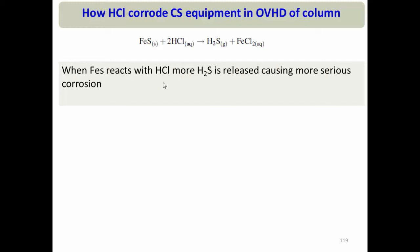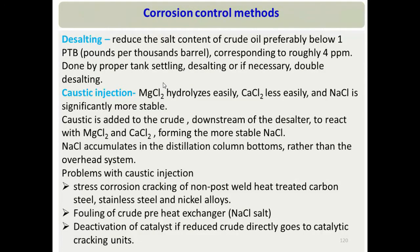To control this corrosion, the first method is to reduce the source of HCl by cutting down salt content in crude oil through a process called desalting. The salt content is reduced below 1 PTB (pounds per thousand barrel), which is roughly 4 ppm. By desalting, HCl concentration in the overhead section becomes very low.